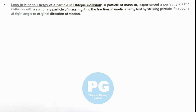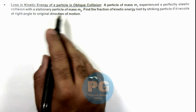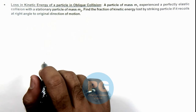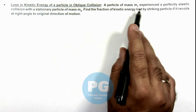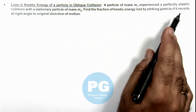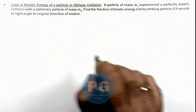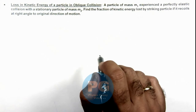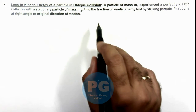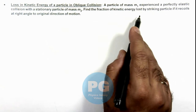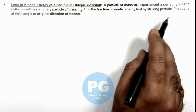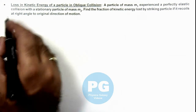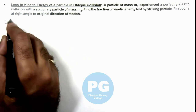In this illustration we'll study about the loss in kinetic energy of a particle in oblique collision. We are given that a particle of mass m1 experiences a perfectly elastic collision with a stationary particle of mass m2. We are required to find the fraction of kinetic energy lost by the striking particle if it recoils at right angle to the original direction of motion.